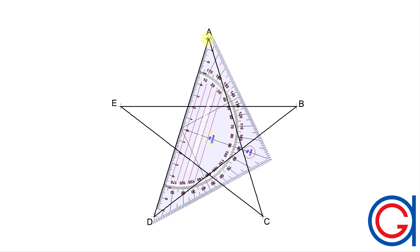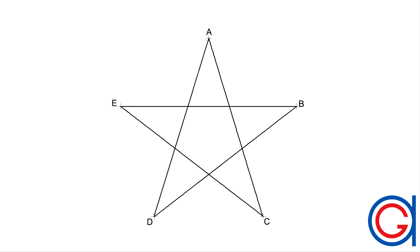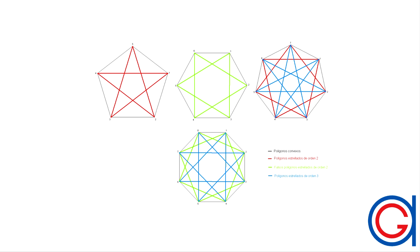So now we have completed our order 2 star pentagon, which is the simplest regular star polygon. By pressing the following link, it shows you how to draw regular star-shaped polygons with any number of sides, and it also explains their mathematical theory.